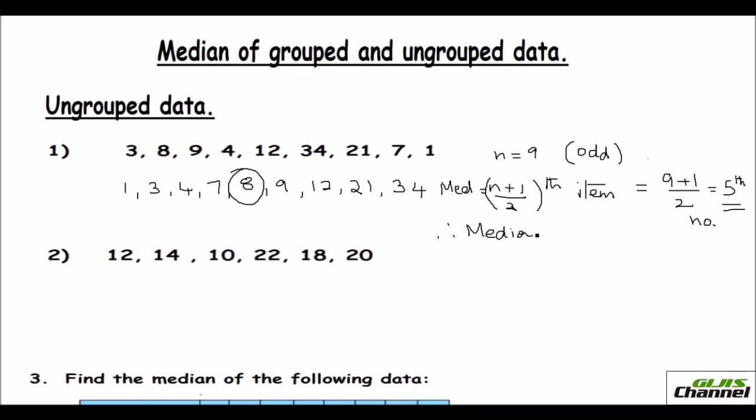So when you have odd number of numbers, all you need to do is do n plus 1 by 2 and that item would be the median. So median is equal to 8 here.